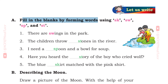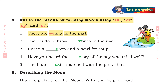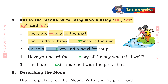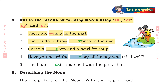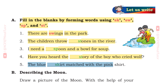Let us write. A. Fill in the blanks by forming words using SK, SW, SP and ST. 1st: There are swings in the park. 2nd: The children throw stones in the river. 3rd: I need a spoon and a bowl for soup. 4th: Have you heard the story of the boy who cried wolf? 5th: The blue skirt matched with the pink shirt.